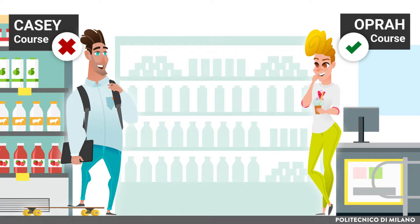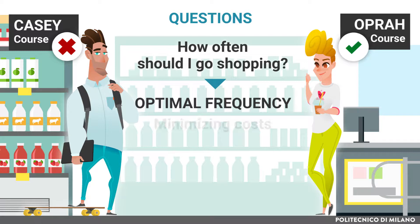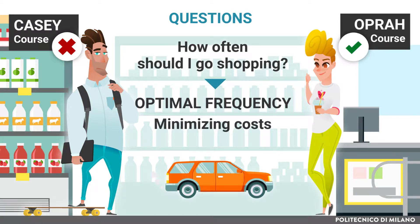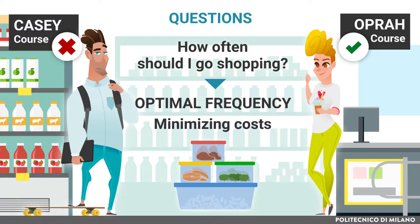When they do their shopping, they should ask themselves some questions. How often should I go shopping? In order to answer this question, they have to find the optimal frequency, minimizing the sum of the relevant costs, such as transportation to get to the supermarket and back, the inventory carrying costs related to storage — for example space — and obsolescence, meaning products expiring.